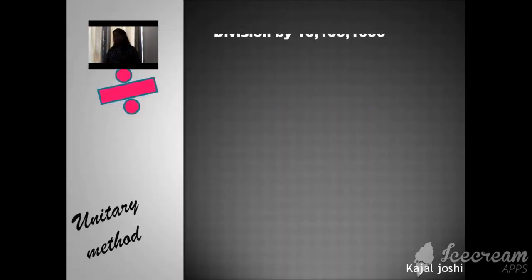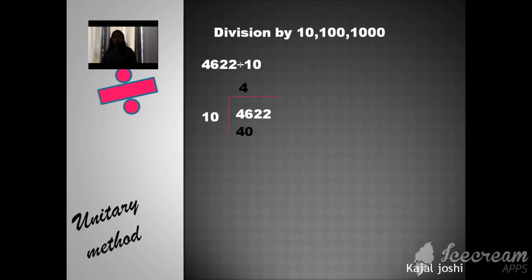Look at here, here I give you division by 10, 100, 1000. So here I give you two methods. Now, first method, 4622 divided by 10. So 4622 is the dividend and 10 is the divisor. So 10 times 4 is 40.